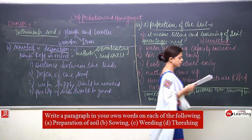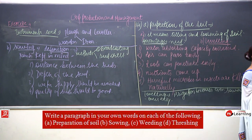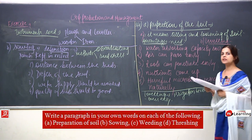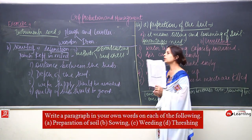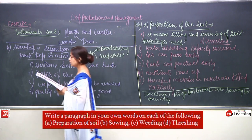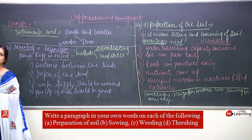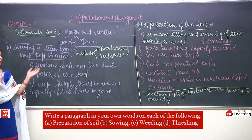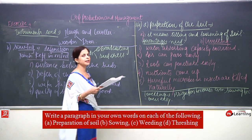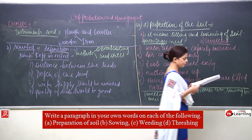Question five — explain how fertilizers are different from manure — will also not be discussed again as it has been covered in depth earlier while writing the definitions and in the chapter itself.